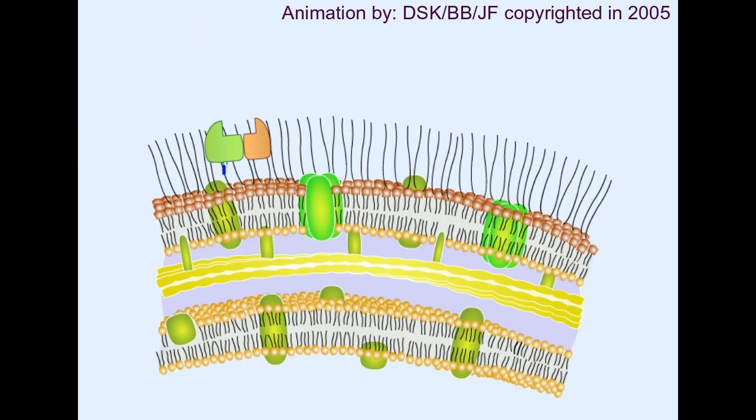Here it comes, C3, this is C5 convertase. It contains a lot of C3b, C2b, and C4b. C5 convertase cleaves those C5, C5 comes into the place, it's cleaved into C5a which is diffused and C5b. Now the C5b keeps attached with the C3b complex there, which is near to the cell membrane of the target pathogen.